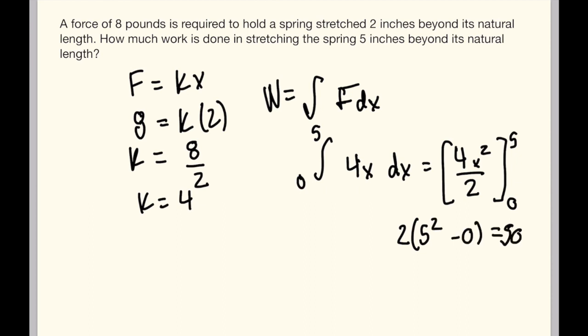So after that, we have to convert into foot-pounds. So we take 50 times 1 over 12 foot-pounds equals 25 over 6 foot-pounds.